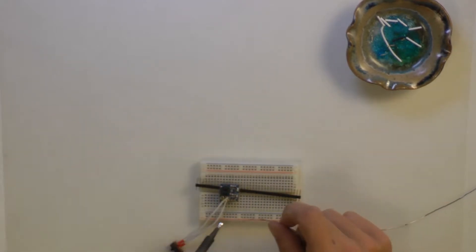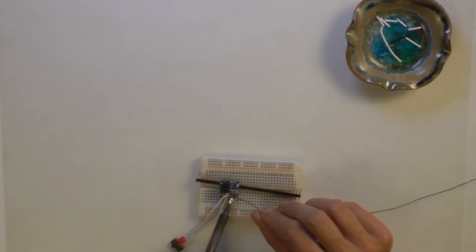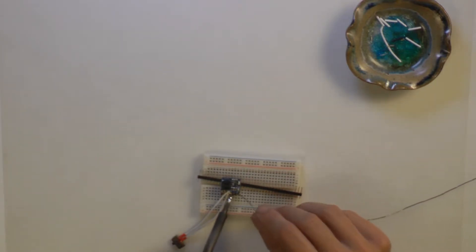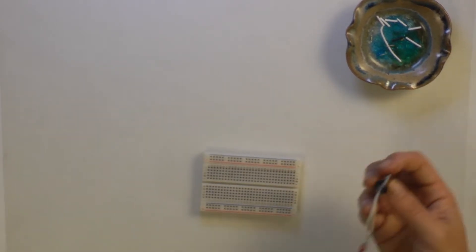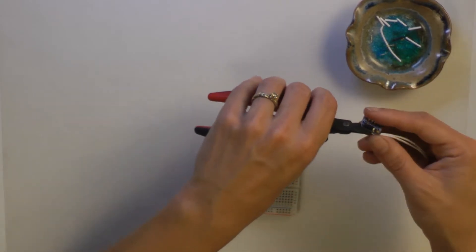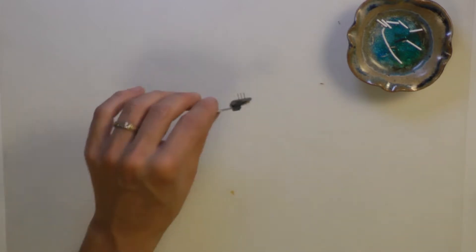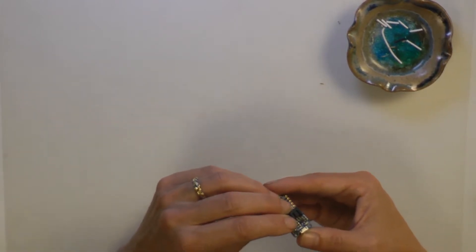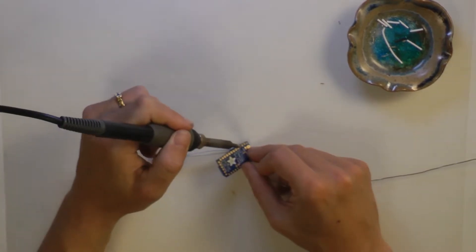Solder the included header onto the backpack charger. Attach it to the Pro Trinket lining up the battery and ground pins.